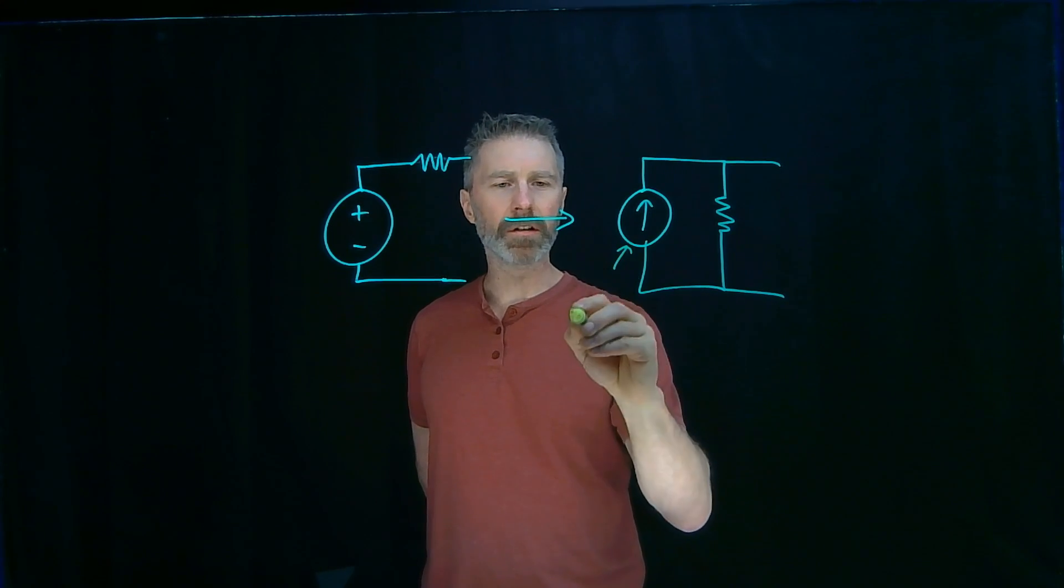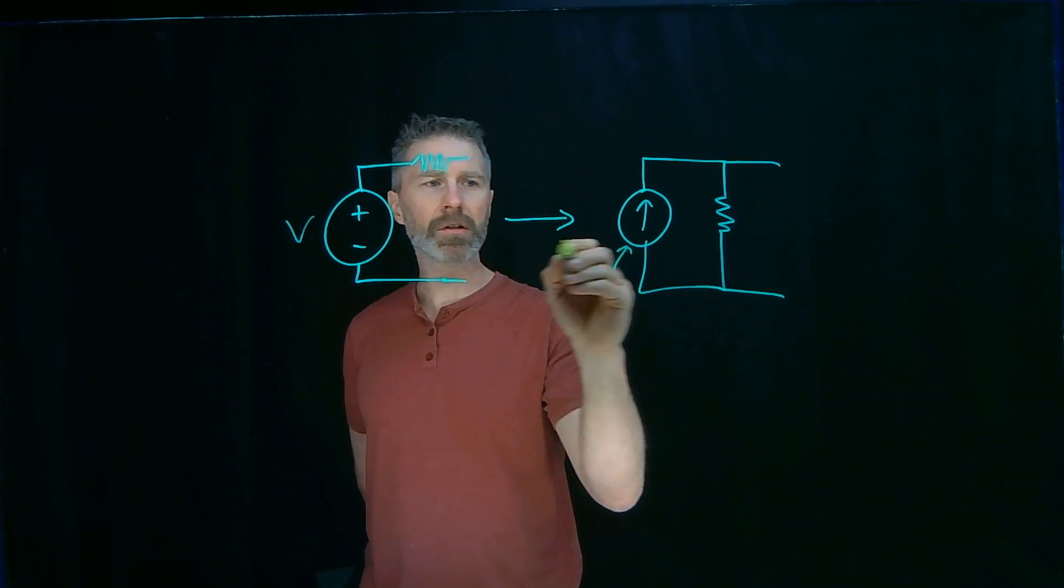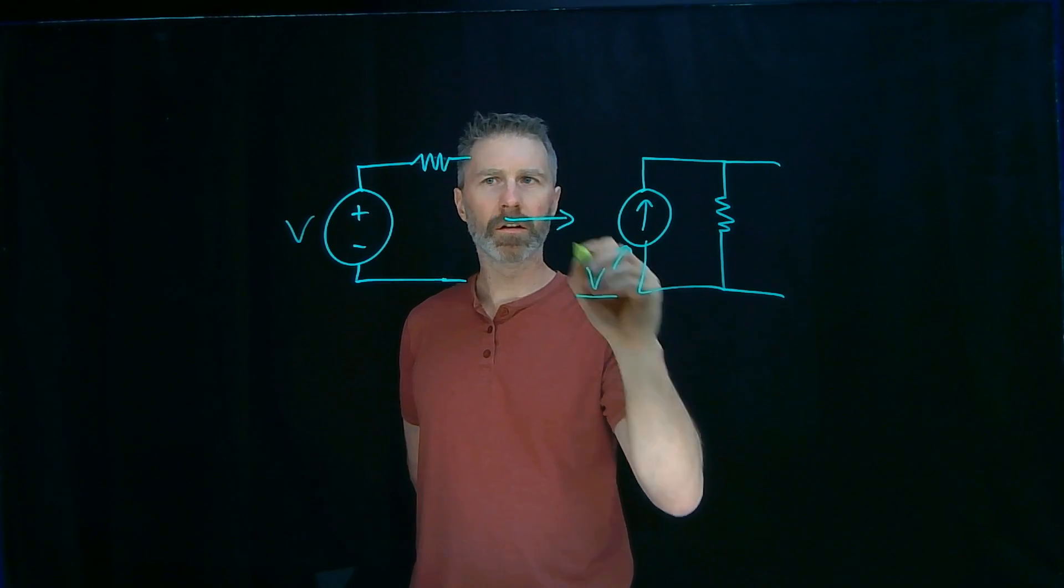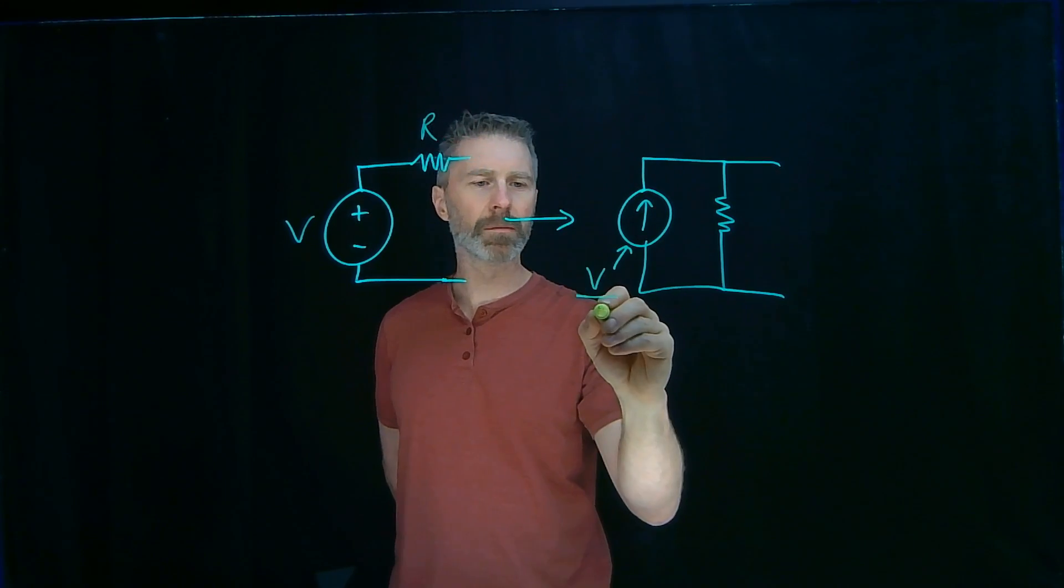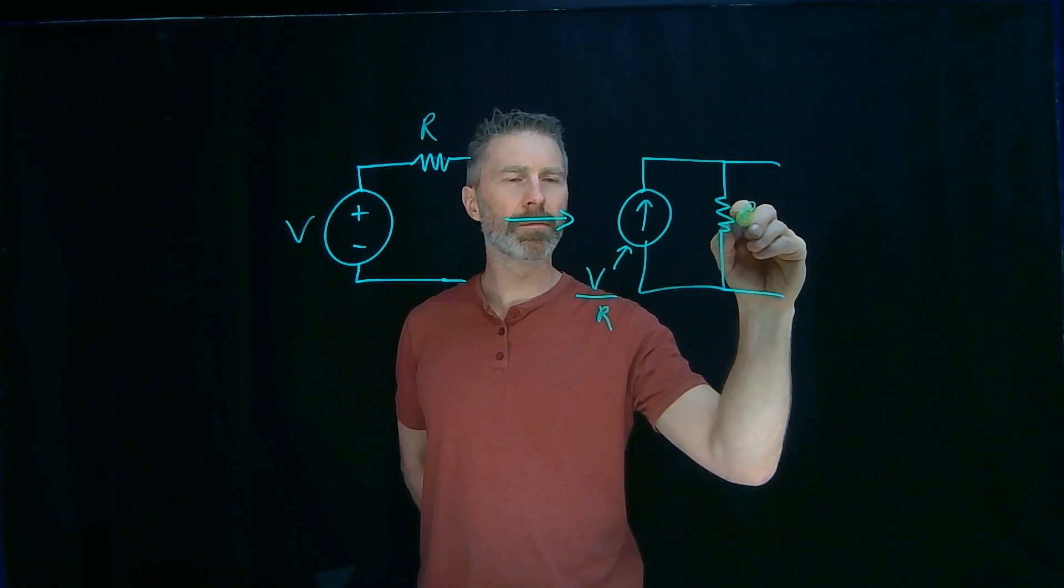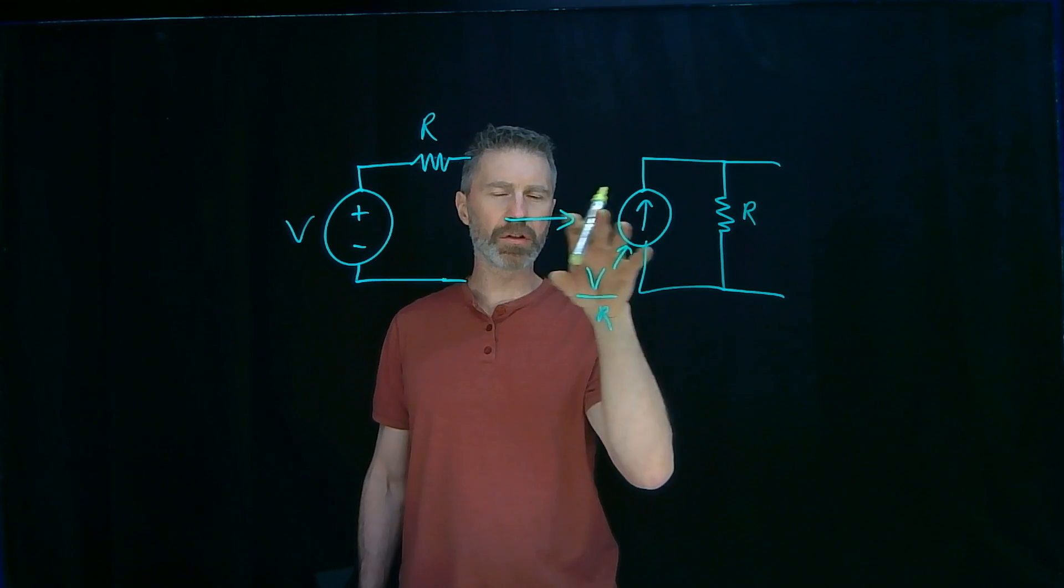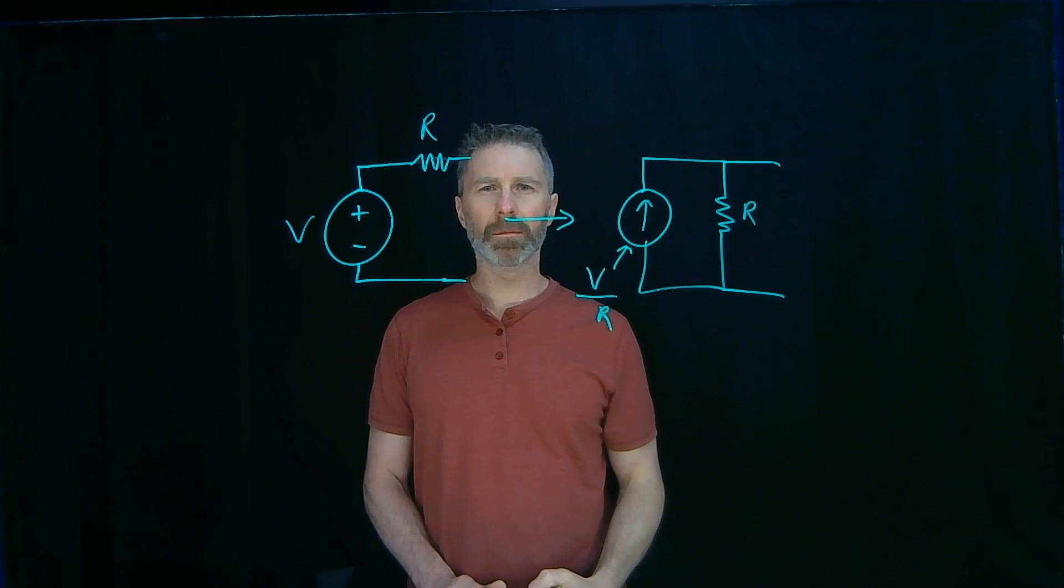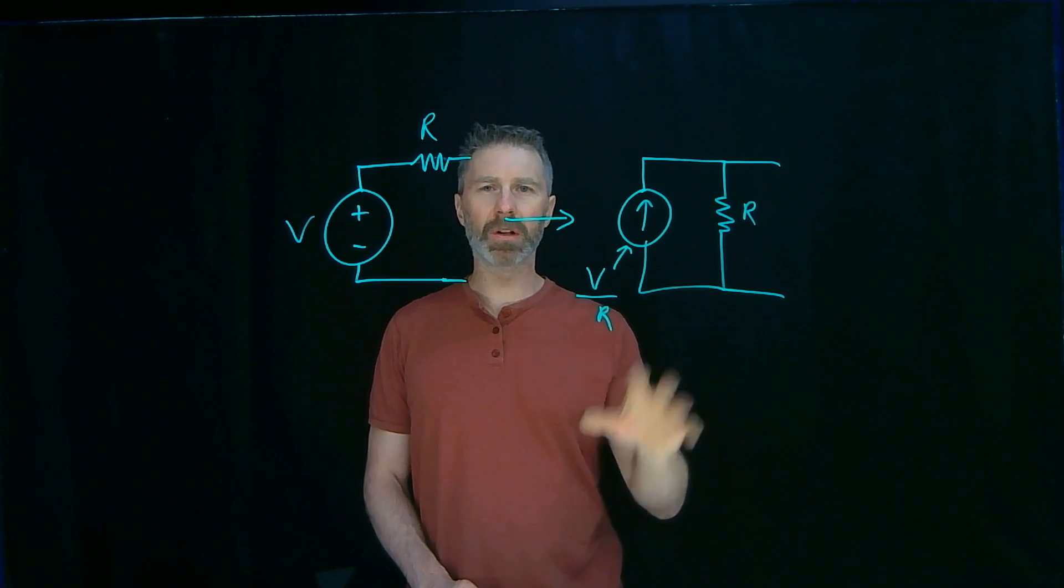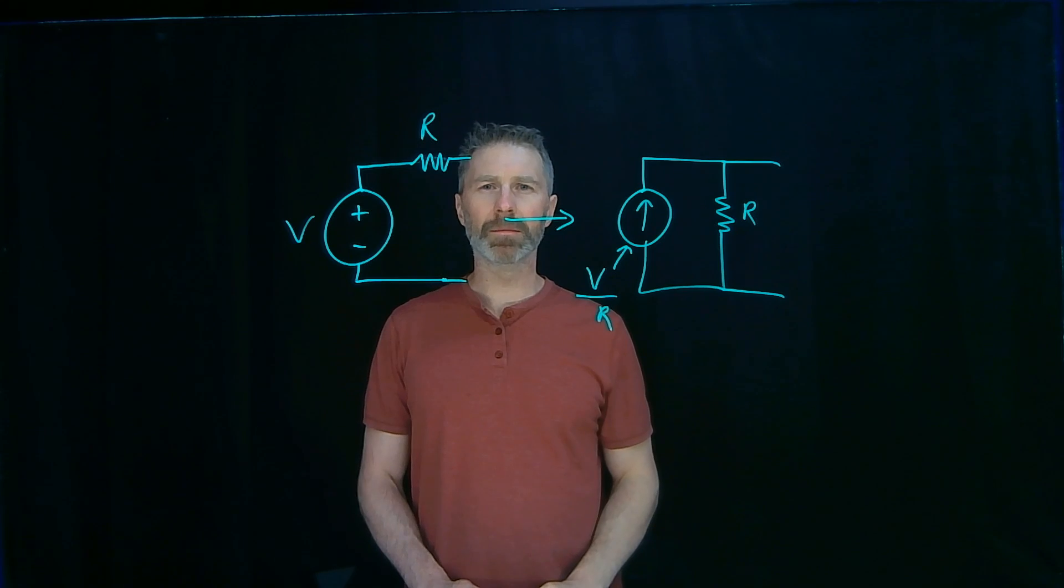because the equivalency says I can convert this voltage source into a current source, where this current equals whatever this voltage is divided by whatever this resistance is, and this resistor is just the same resistor value. With this equivalency, I can convert from a voltage source to a current source. So knowing Thevenin's theorem, it totally makes sense there's another equivalent theorem using current sources.